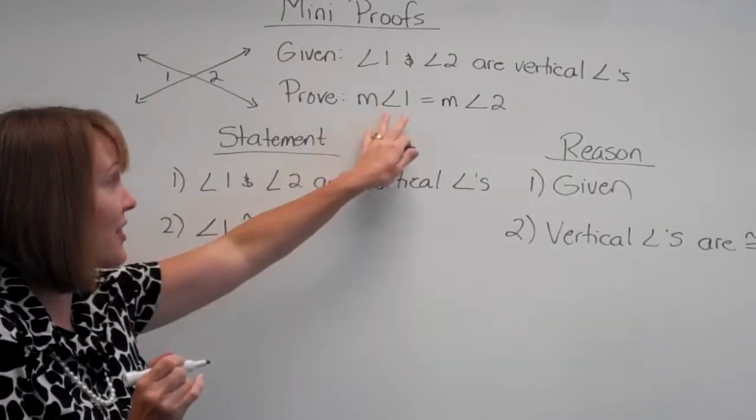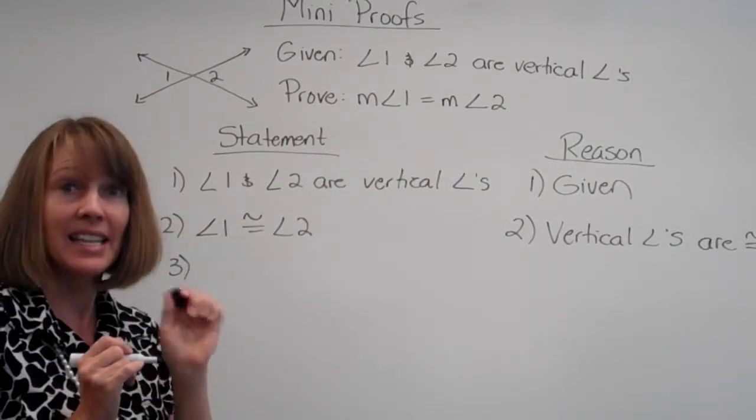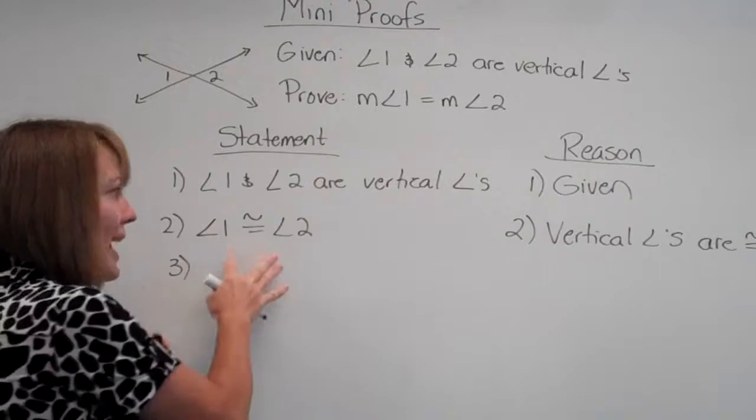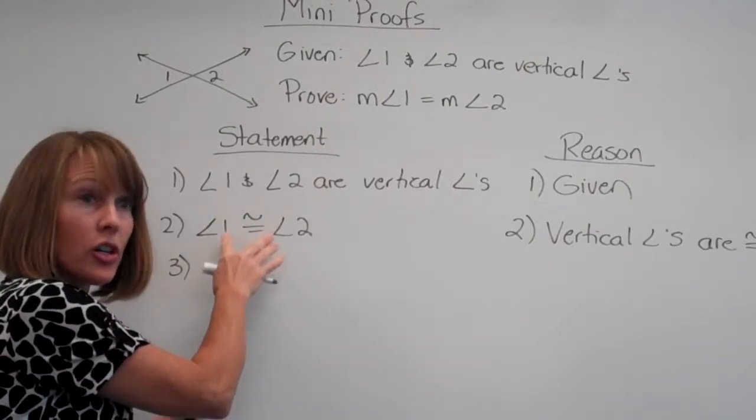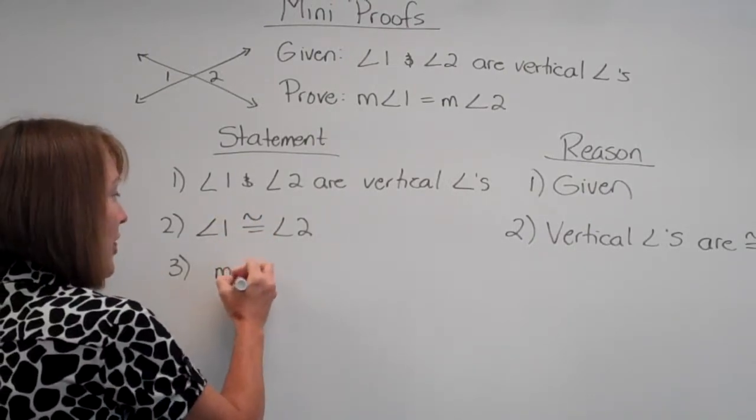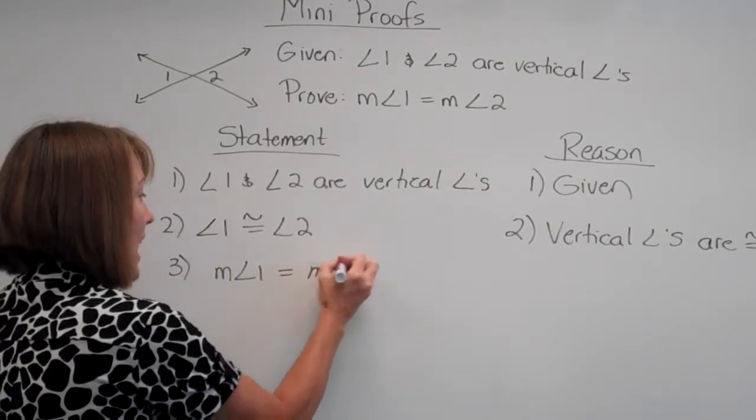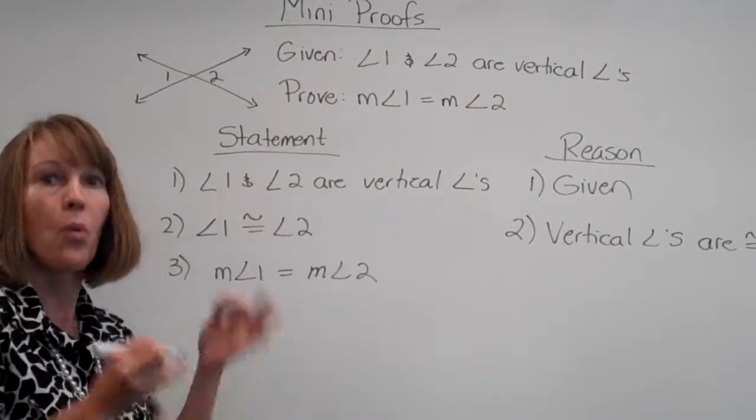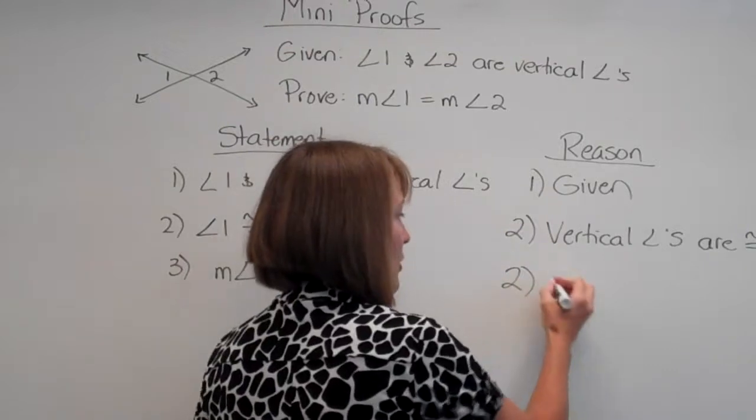But we haven't proved yet that the measure of angle 1 is equal to the measure of angle 2. But hey, we know that if the angles are congruent, then we can jump right to their measures are equal. How do we know that? Well, that is the definition of congruent angles.